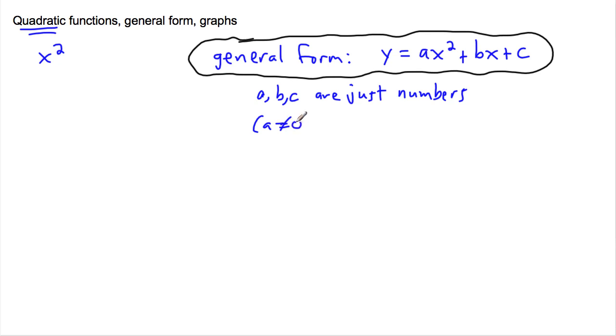So a cannot be zero, because if you make a zero, that means this whole thing cancels out and then it's something x plus something, and that's linear. So a can't be zero, it can be one or greater, negative, a fraction, just can't be zero.